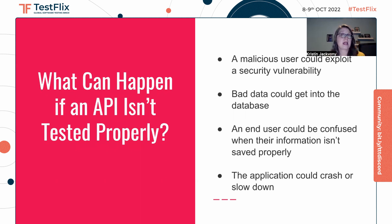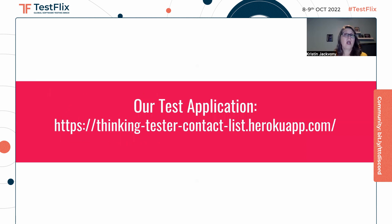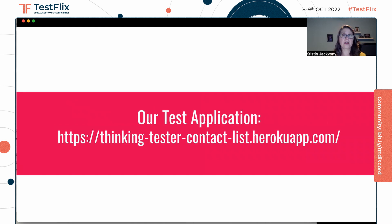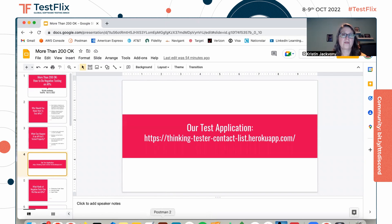So what can happen if an API isn't tested properly? A malicious user could exploit a security vulnerability. Bad data could get into the database. An end user could be confused when their information isn't saved properly. Or the application could crash or slow down. Now that we know why we should be testing APIs, we're going to take a look at our test application, which you can find at thinkingtestercontactlistherokuapp.com. This is a website that has an underlying API data store that you can use to practice API testing and see how your API calls result in changes in the UI or vice versa.